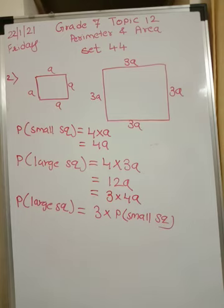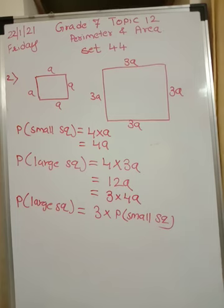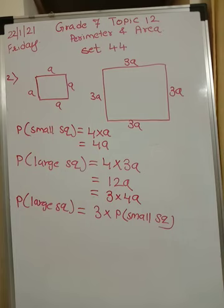Two questions done; only two more are remaining. That's all for today, students — we will stop here. Please take down notes and understand the concept. Do not just learn the formula, but try to derive it yourself. If you know what perimeter means, you can derive the formula for the perimeter of a square as well as a rectangle. Thank you.